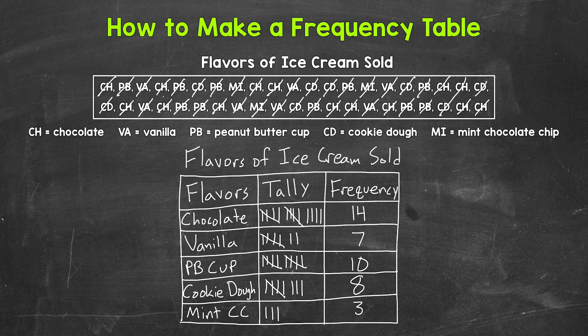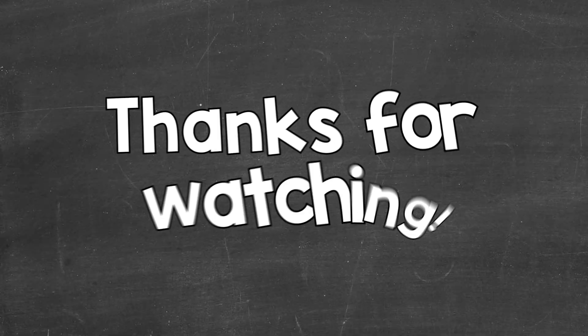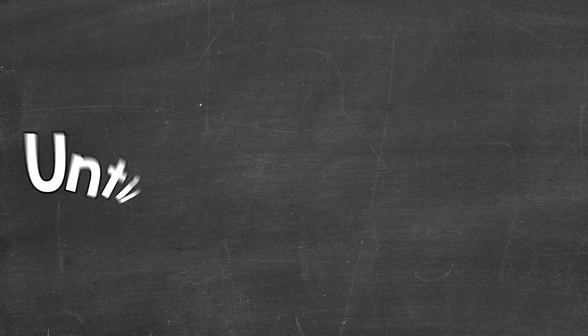You can see that this frequency table helped us organize our data. This is much easier to interpret — much more meaningful than just looking at a list of flavors. So there you have it, that's how to create a frequency table. We worked with qualitative data — non-numerical data — for our example. I hope that helped. Thanks so much for watching. Until next time, peace.